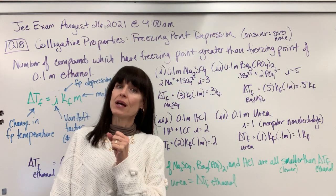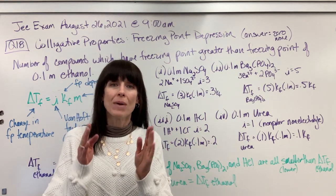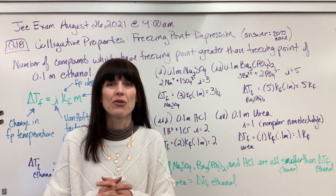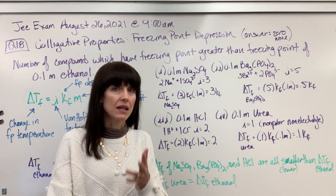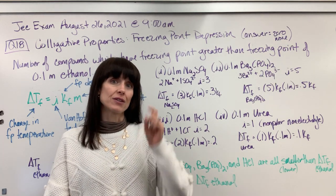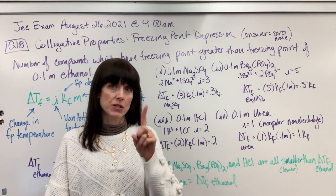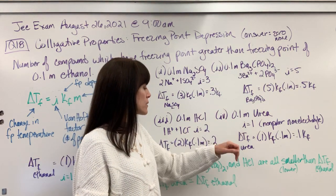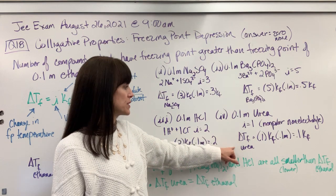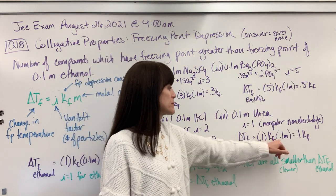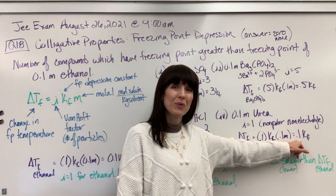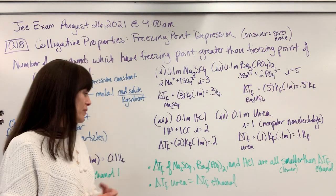Urea. Urea is also a molecule. So it's a covalent, non-volatile, non-electrolyte. Its Van't Hoff factor is one. It doesn't break apart. It's just going to be one particle. Change in temperature of freezing for urea, one times Kf times 0.1 molal gives us 0.1. So here's your summary from this.